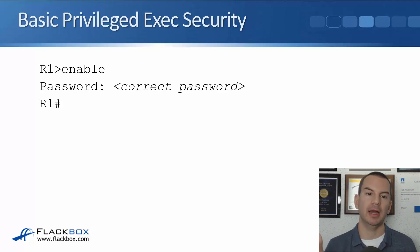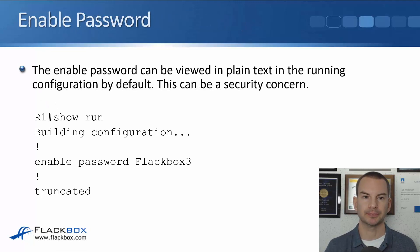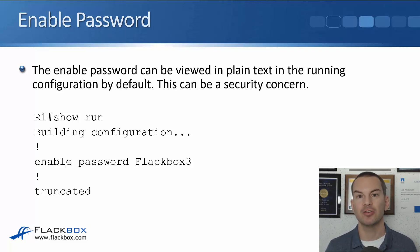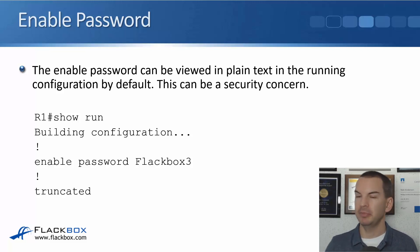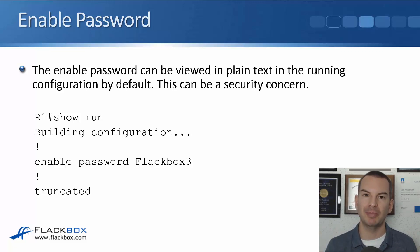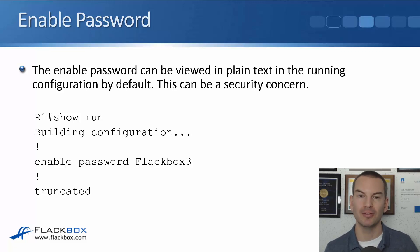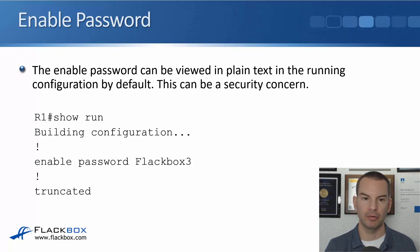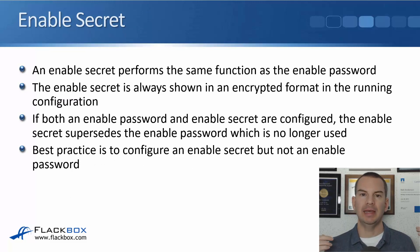Once we've done this, if we are at the user prompt and we enter the enable command, we'll be prompted for that enable password. Now, the problem with the enable password is that if you do a show run, it shows up in plain text. So if you're the senior administrator and you've got a junior administrator with you doing some training, if you do a show run command on the router while they're looking over your shoulder, they will see what the enable password is. You can see here we've done a show run and the enable password is shown in plain text as flatbox3.